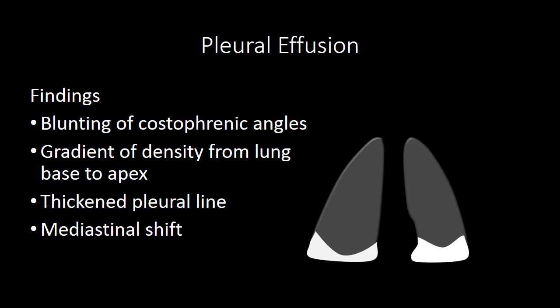More fluid accumulates at the base and less fluid accumulates at the apex, so you have this wedge-shaped gradient of density. You can also see a thickened pleural line looking along the lateral chest wall, with a separation between the ribs and the lung tissue. In large pleural effusions affecting only one side of the chest, you can also see mediastinal shift.